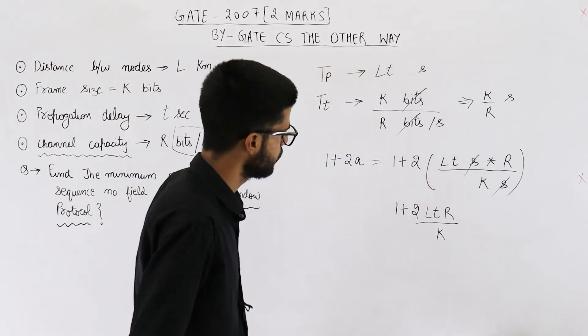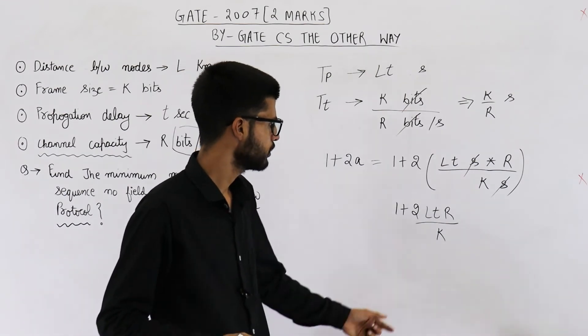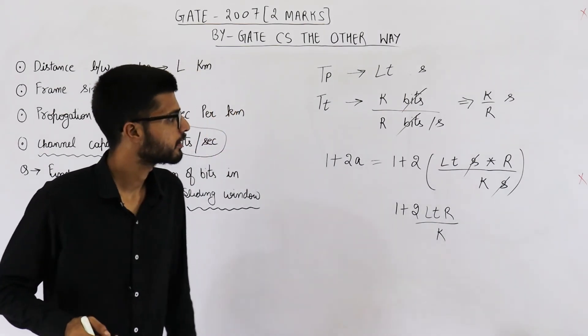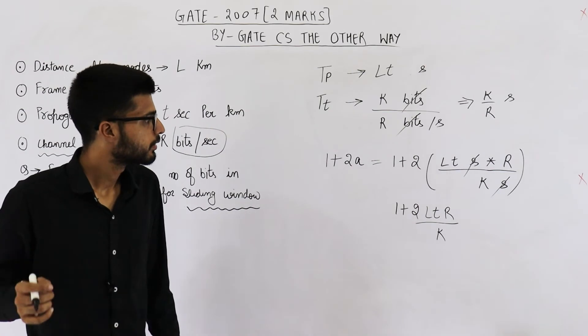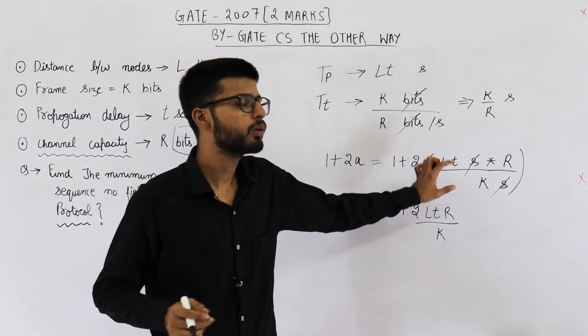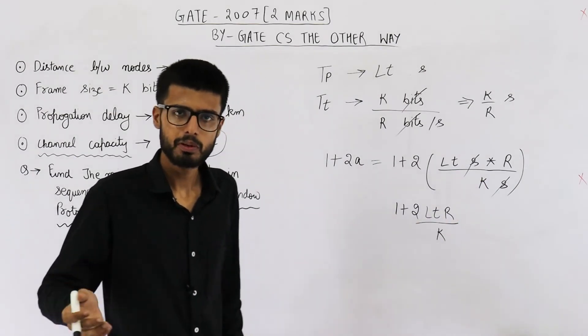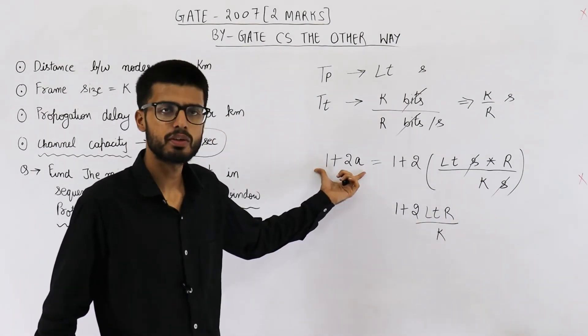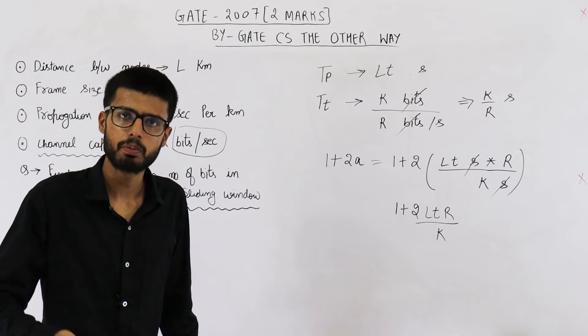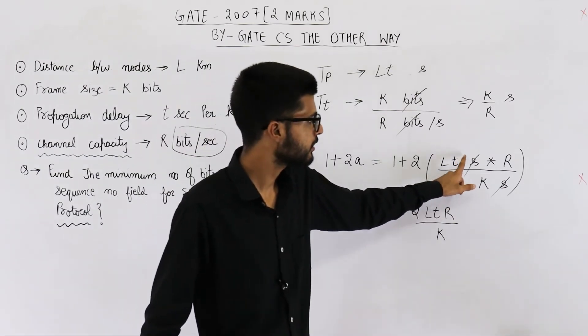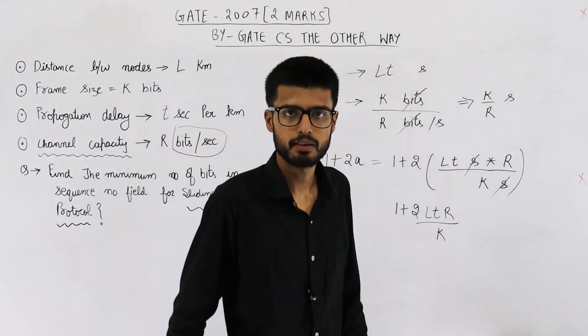So you can just simplify it further if you want to. Just take the LCM or leave it like this only. Now you can see there will be no unit of this. This is just a number. Because we are calculating the sender window size. Sender window size will be number of packets. It will not have any units. That is the reason this one got cancelled.